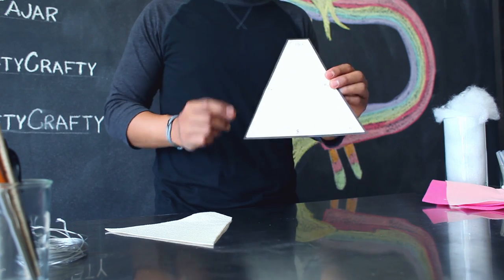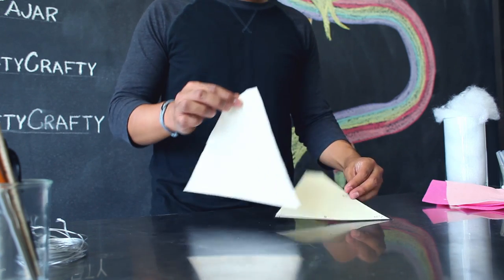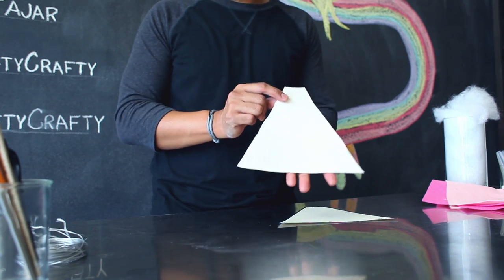After you've drawn your template, go ahead and trace it onto a piece of felt and then cut it out. This will be the base of your horn.